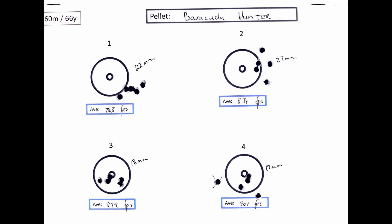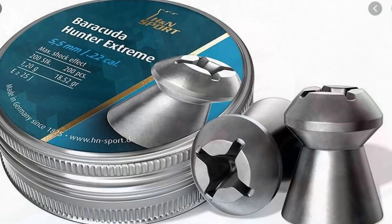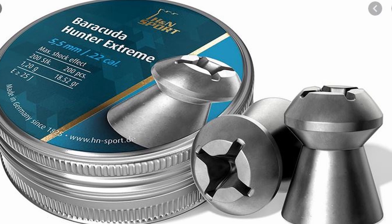Alright, let's keep on fussing about. Let's go to the Barracuda Hunter Extreme. Next up, the Barracuda Hunter Extremes. They are in 18.52 grain. Let's give them a whirl.